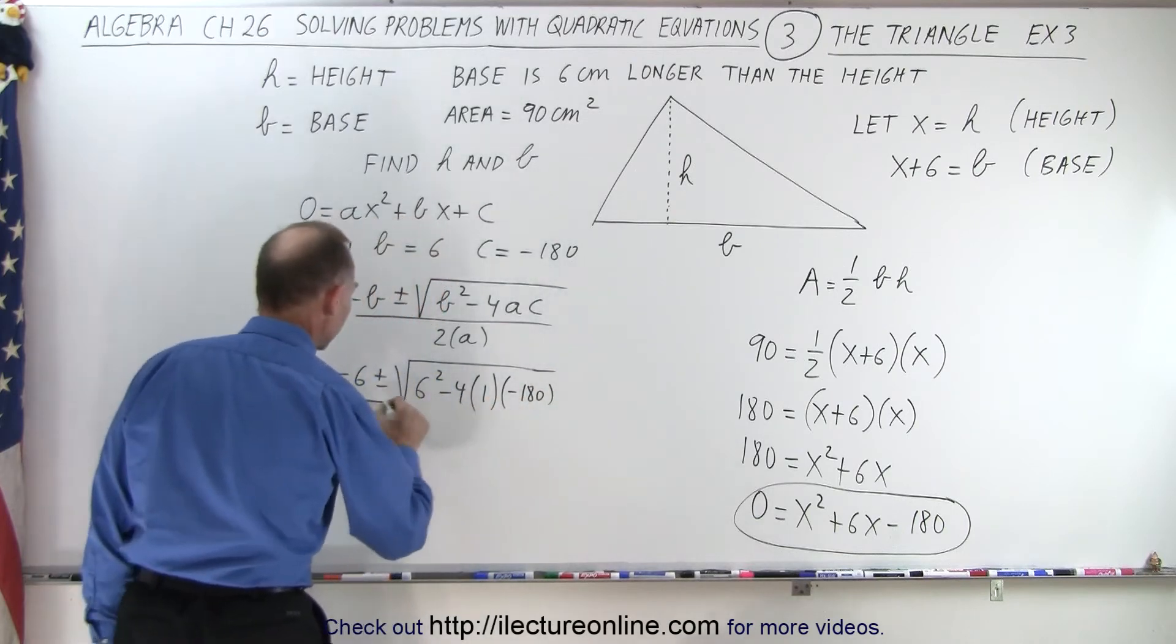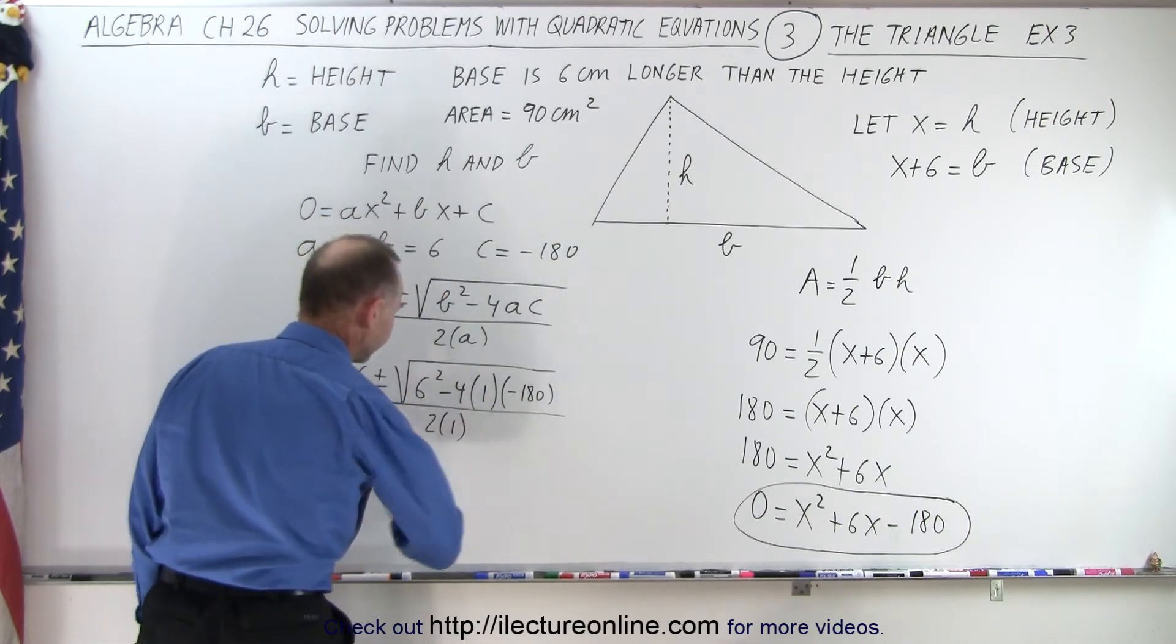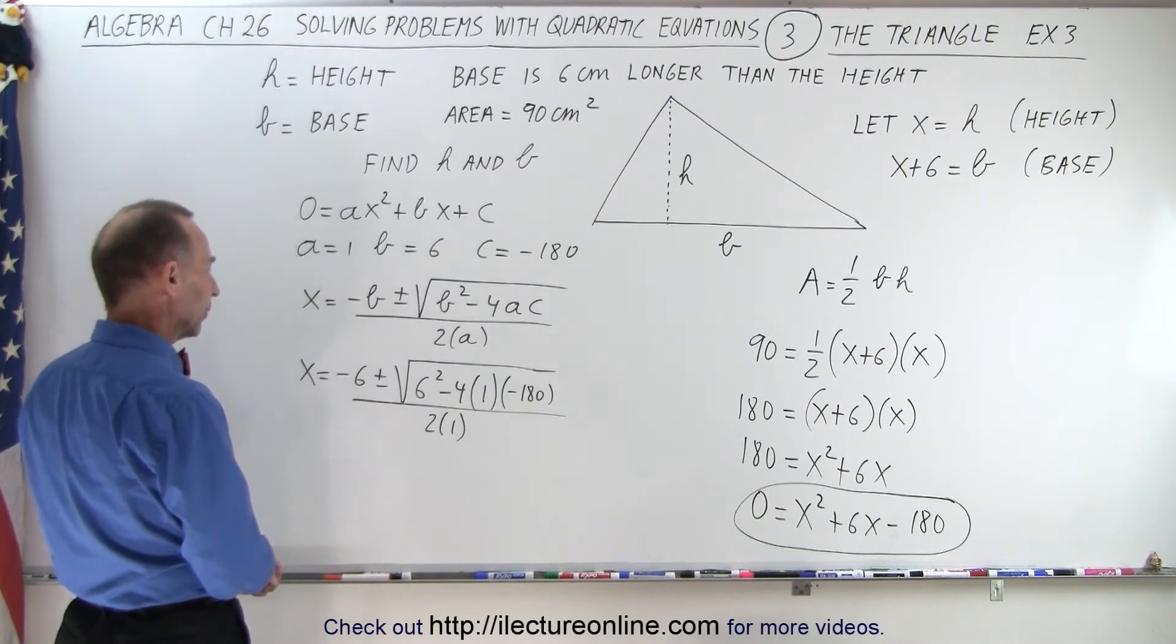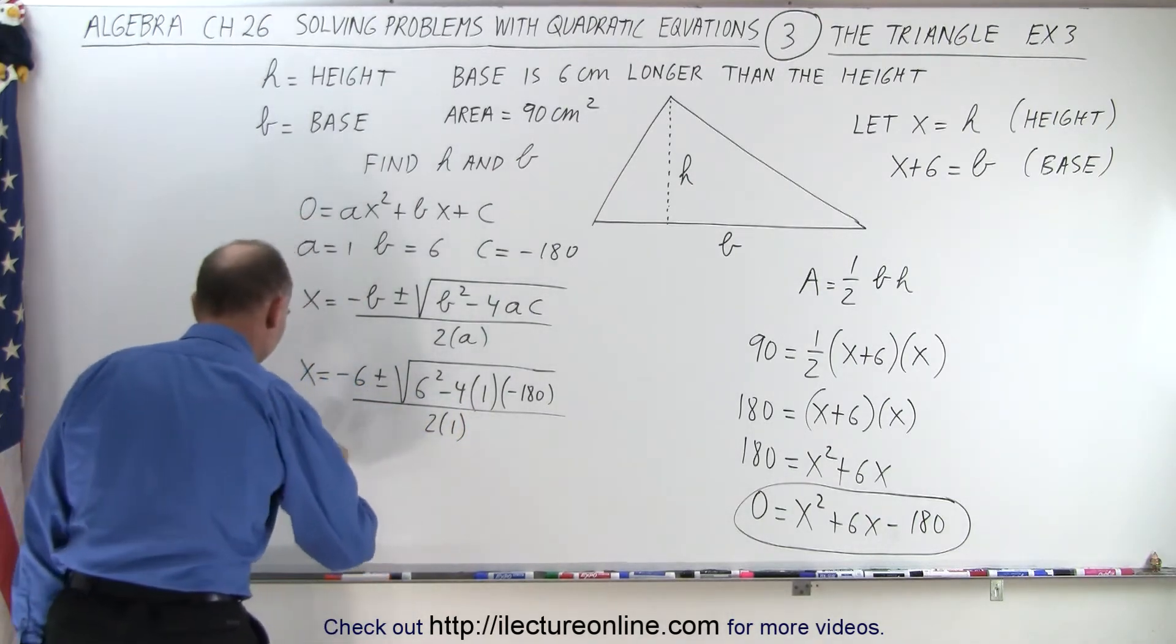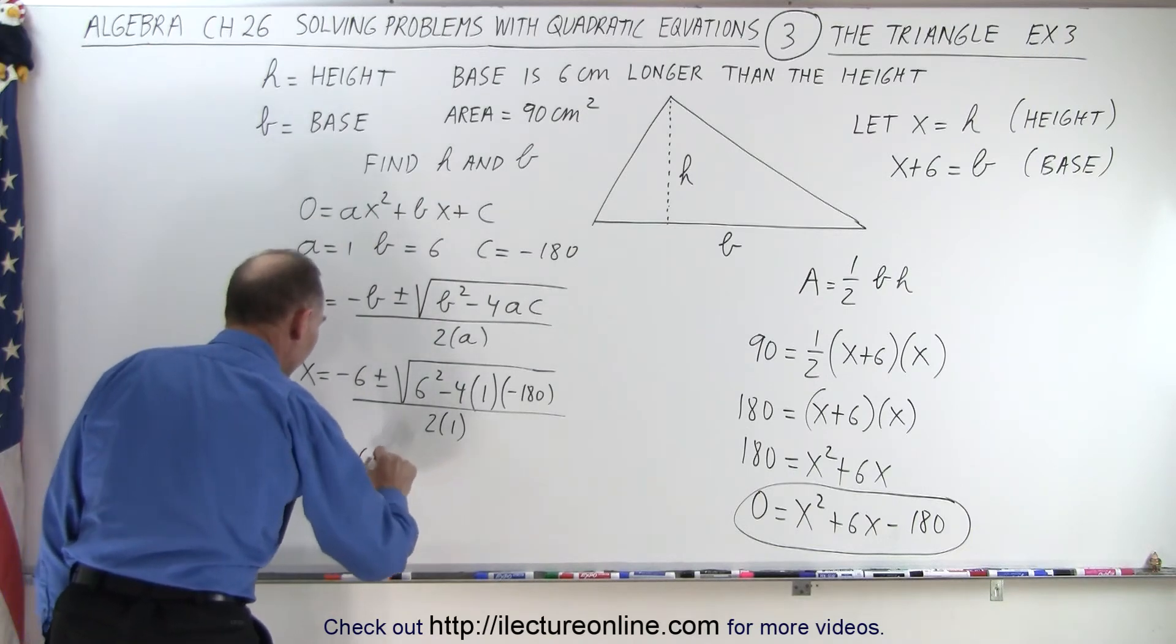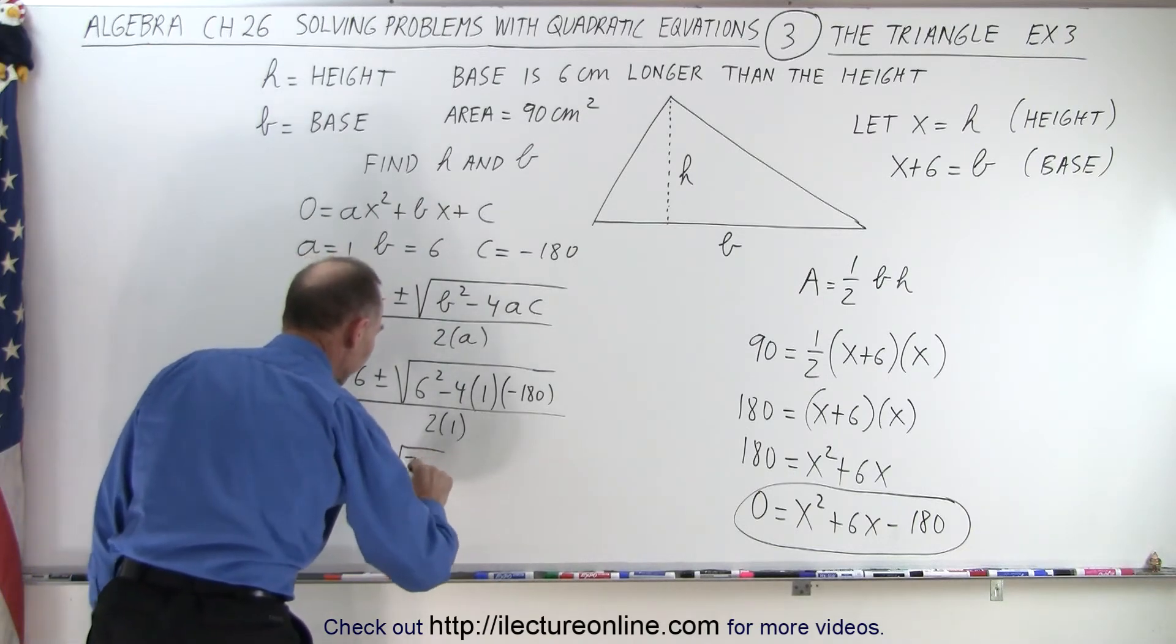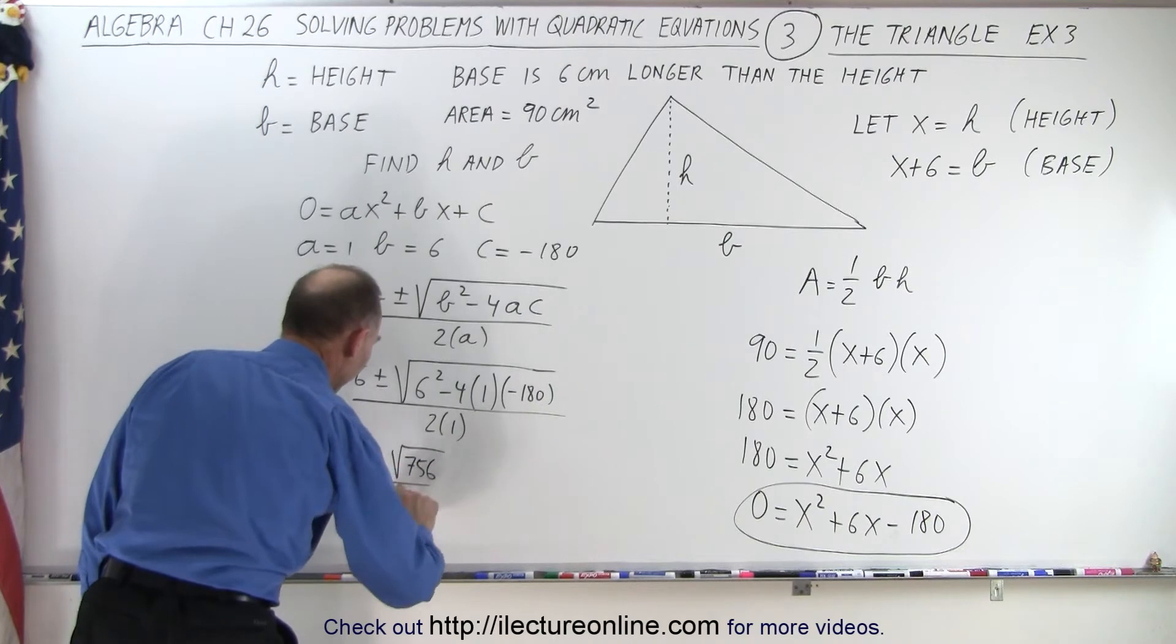That would be 720 plus 36, which would be 756. So x equals minus 6 plus or minus the square root of 756, all divided by 2. That means we have two possible answers.